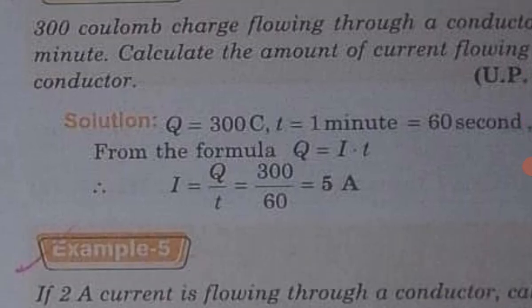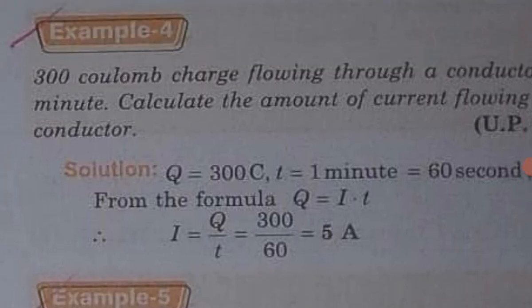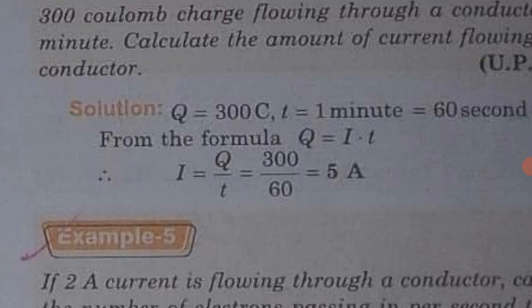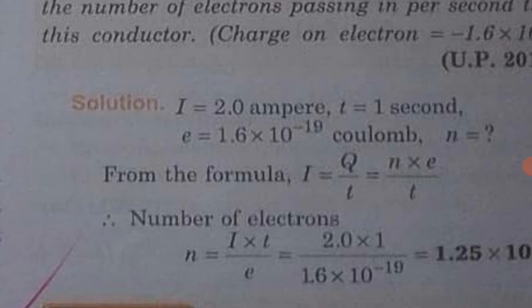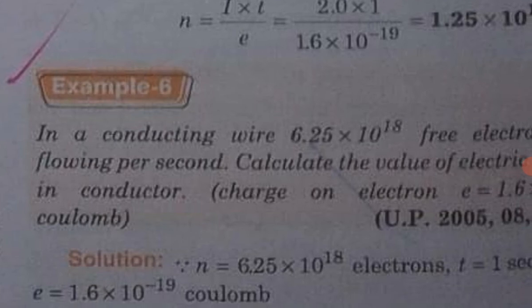Here, Q value and time value are known. I is equal to Q upon T. The time given is 10 minutes, which we convert to seconds: 10 × 60 = 600 seconds. So the answer is 5 ampere. In this way all the numericals here are solved — practice these numericals.